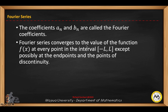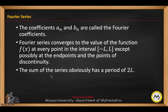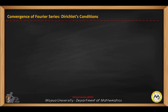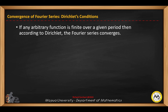The Fourier series converges to the value of the function f of x at every point in the interval from negative l to l, except possibly at the endpoints and the points of discontinuity. The sum of the series will have a period of 2l. Now, if any arbitrary function is finite over a given period, then the Fourier series converges.